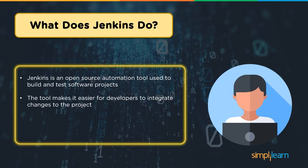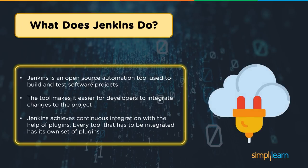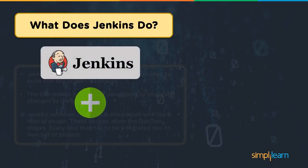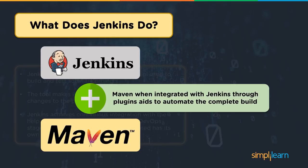Jenkins achieves continuous integration with the help of plugins. Each tool you want to integrate has its own plugin available. For example, to integrate Maven, there is a Maven plugin in Jenkins which you can install and configure. Once configured, you will be able to use Maven there. You can deploy Maven as a build tool onto the Jenkins server and configure any number of Maven jobs. When Maven integrates with Jenkins through the plugin, you can automate the builds.